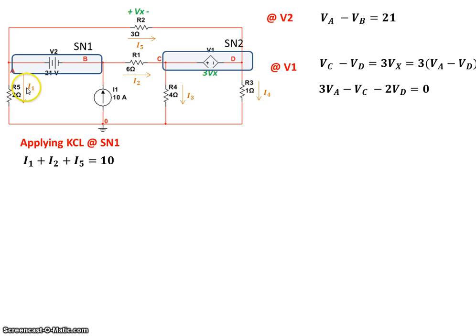I1 is basically VA minus the reference divided by 2. So we can write that in terms of the voltages. I2 similarly is VB minus VC divided by 6. I5 is VA minus VD divided by 3. And that all is equal to 10. So if we rearrange everything, we get this.